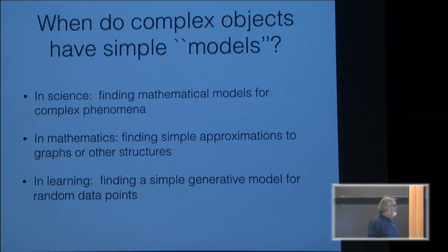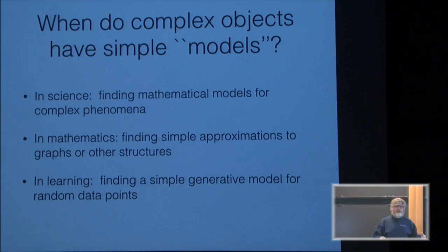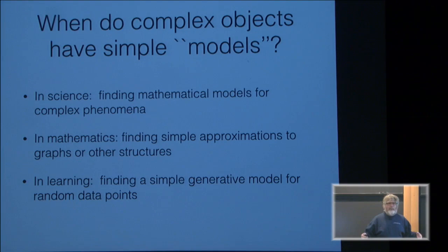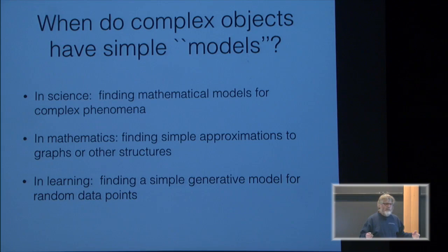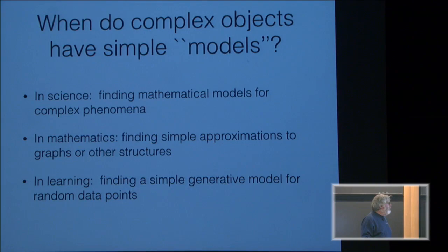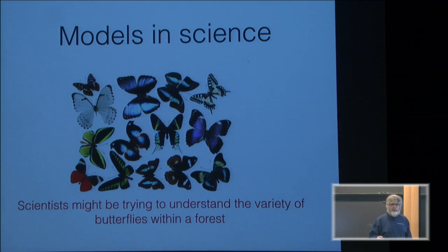So the question is: when can we find simple models of complex objects? This comes up in science because you're studying some complex object like the weather and you want some kind of mathematical model for it. In mathematics, maybe we have a huge graph and we want to find a simple representation that captures the high-level structure. And in learning, we want to find some way of describing data we've seen, generalizing it to come up with a simple model of where the data is coming from. We're going to see that these three viewpoints are really very connected.